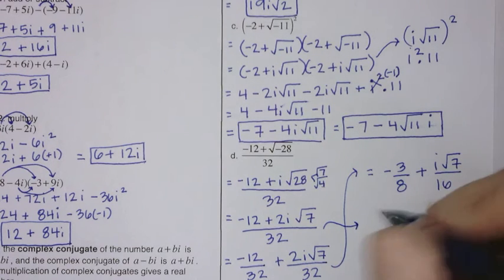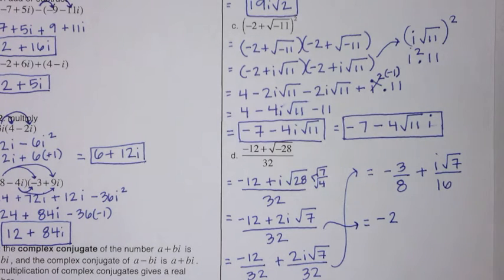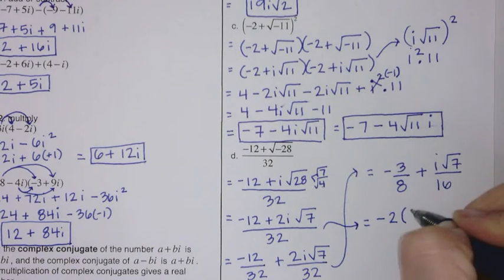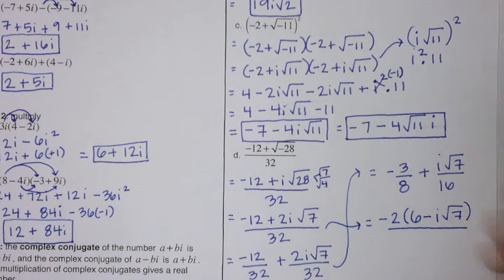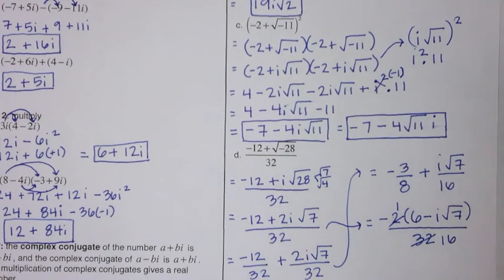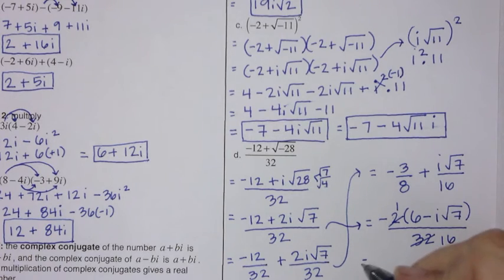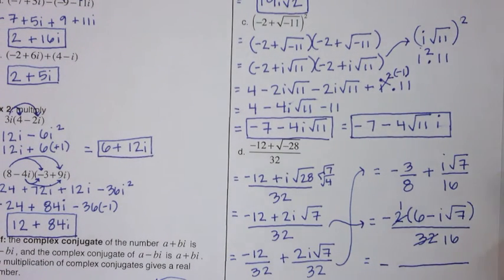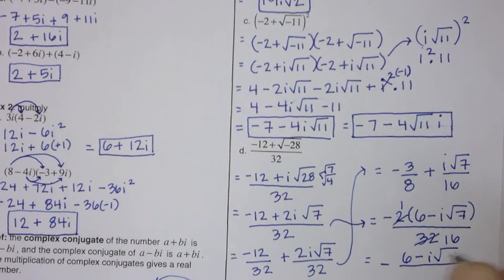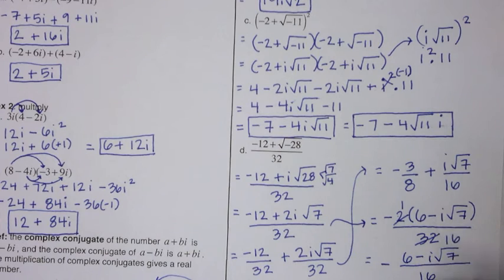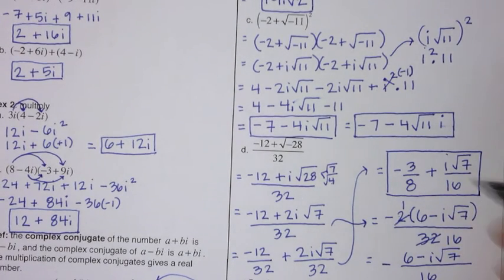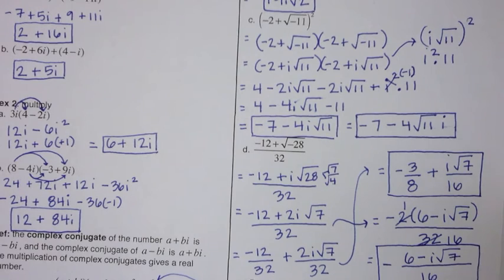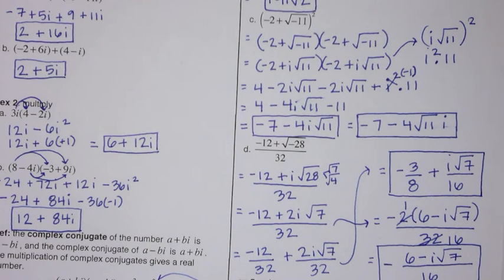Alternatively, factor out negative 2 from the numerator to get negative 2(6 minus i root 7) over 32. The negative out front carries along with the fraction bar, and then 2 goes into 32 sixteen times, giving negative(6 minus i root 7) over 16. Both forms — as two separate fractions or as a single combined fraction — are equally correct.